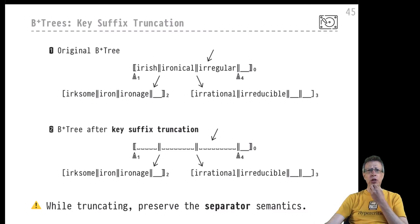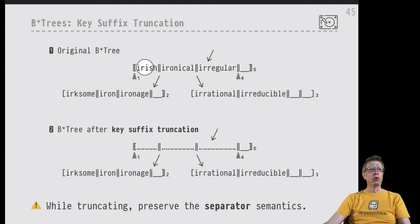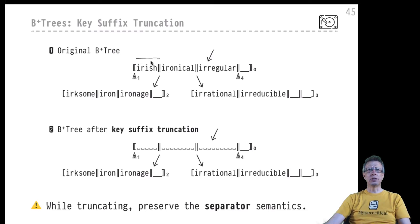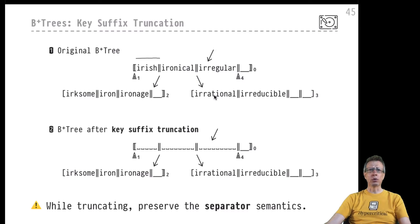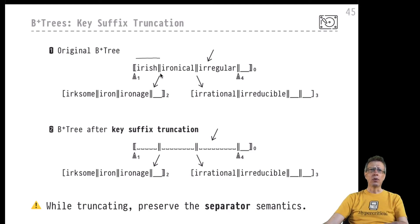Let's remind ourselves of the inner structure of such an inner node. We find index entries there — each consisting of a key and a page pointer, for example a pointer pointing to page two. We also have the page pointer P0 here that points to some subtree. These are the index entries inside our inner nodes, and they point to subtrees below.